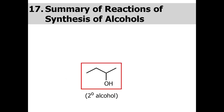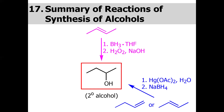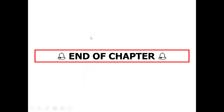In summary, alcohol can be synthesized from alkenes via three methods: hydroboration-oxidation, oxymercuration-demercuration, and acid-catalyzed hydration. These are the reactions covered in today's lecture on synthesizing alcohols. That's all for today.